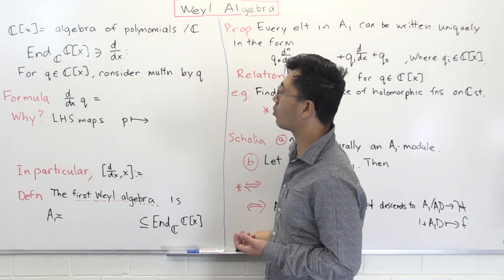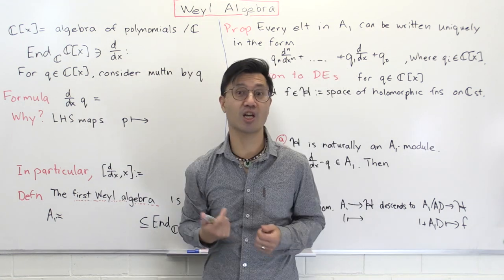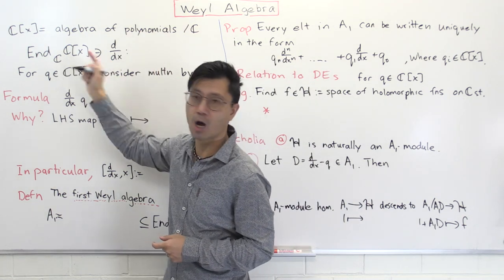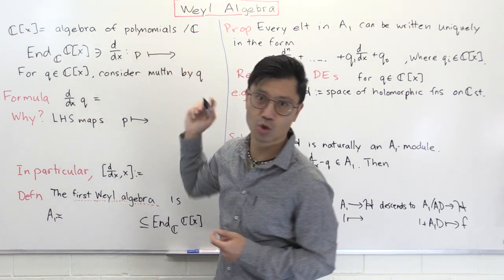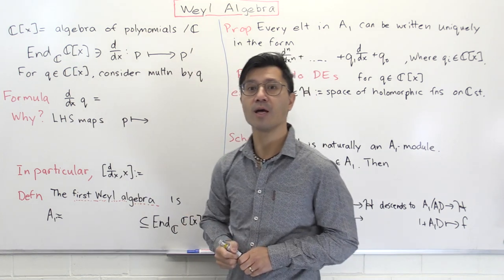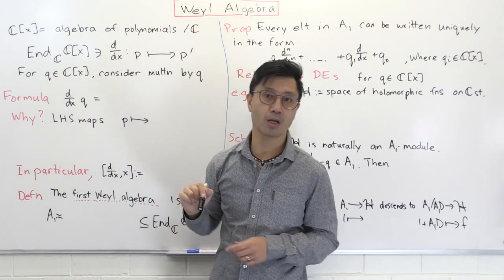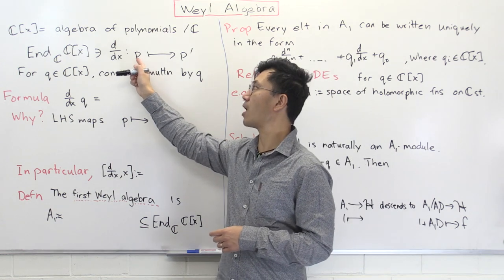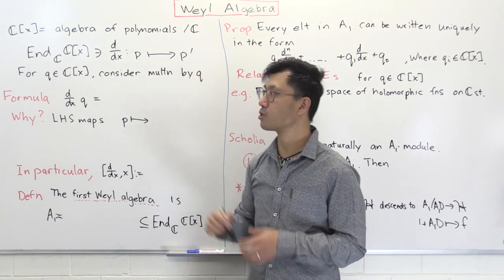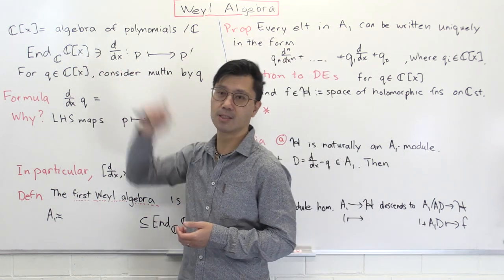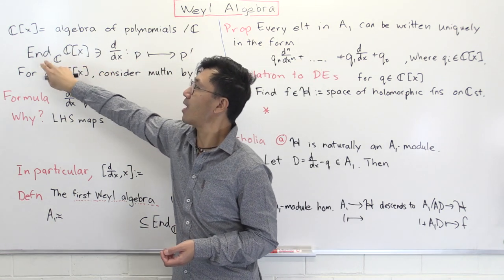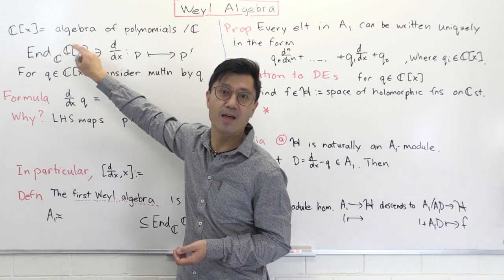One example of such a linear endomorphism is just the differentiation operator. If you have some polynomial p inside here, it just sends it to its derivative, which is also a polynomial. This sends sums of polynomials to the sums of their derivatives, and if you scalar multiply by some complex number, you can pull out that complex number — so it is linear and is an element inside here. So this derivative is inside the endomorphism ring of C[x].